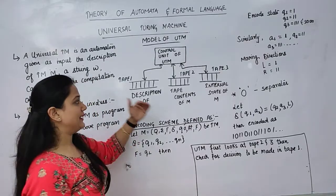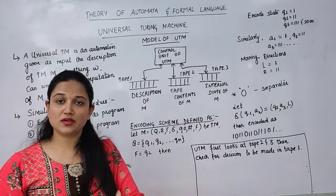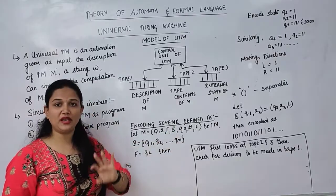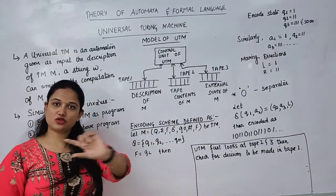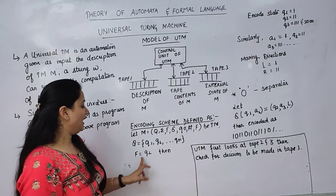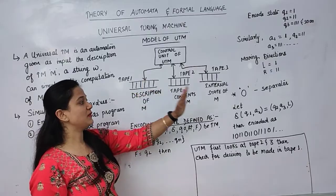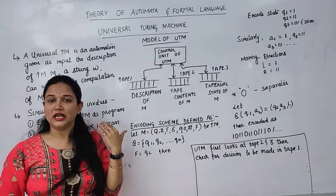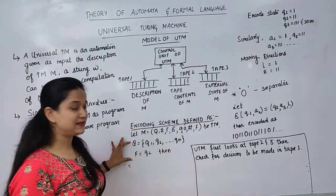The functioning within the universal Turing machine is in encoded form. So how do we encode those transitions, the language, and the description of Turing machine M? For encoding, suppose a Turing machine is defined by seven tuples. Q equals Q1, Q2, up to Qn — this is a list of states. Q1 is the initial state, and F equals Q2, so Q2 is the final state. When we reach the final state, the control unit will display that the particular string is accepted by the Turing machine.